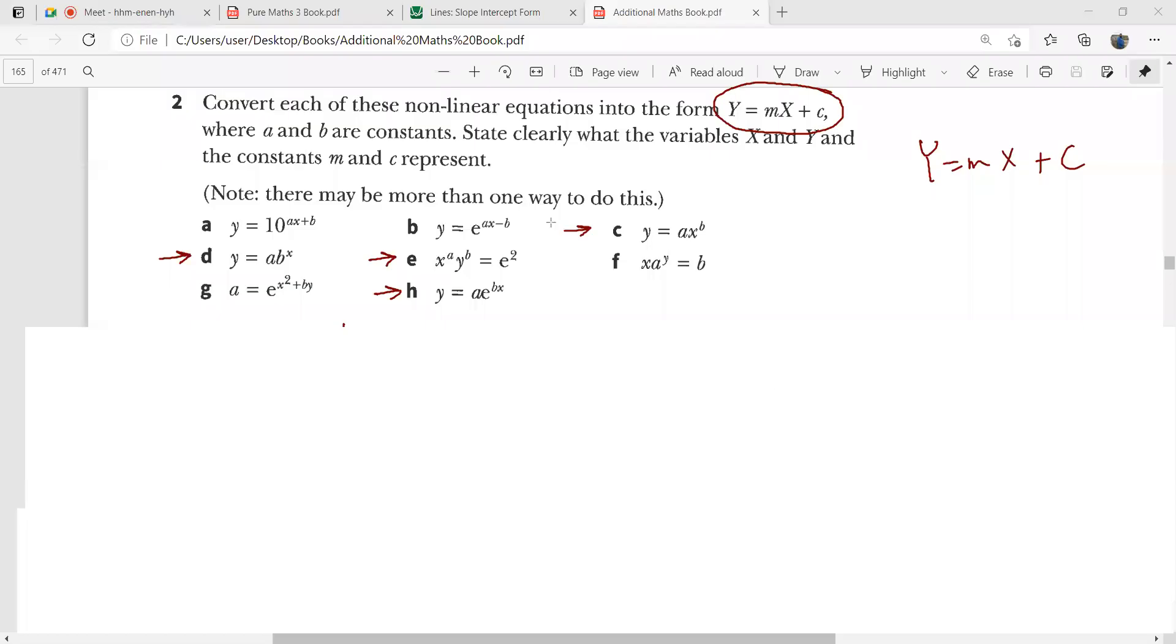As I look at this part d, this says y equals a b raised to the power x. So we take the log on both sides, ln y equals ln a. I think we have done this already. Or that was a different part. Oh yes, there is a bit of difference here.